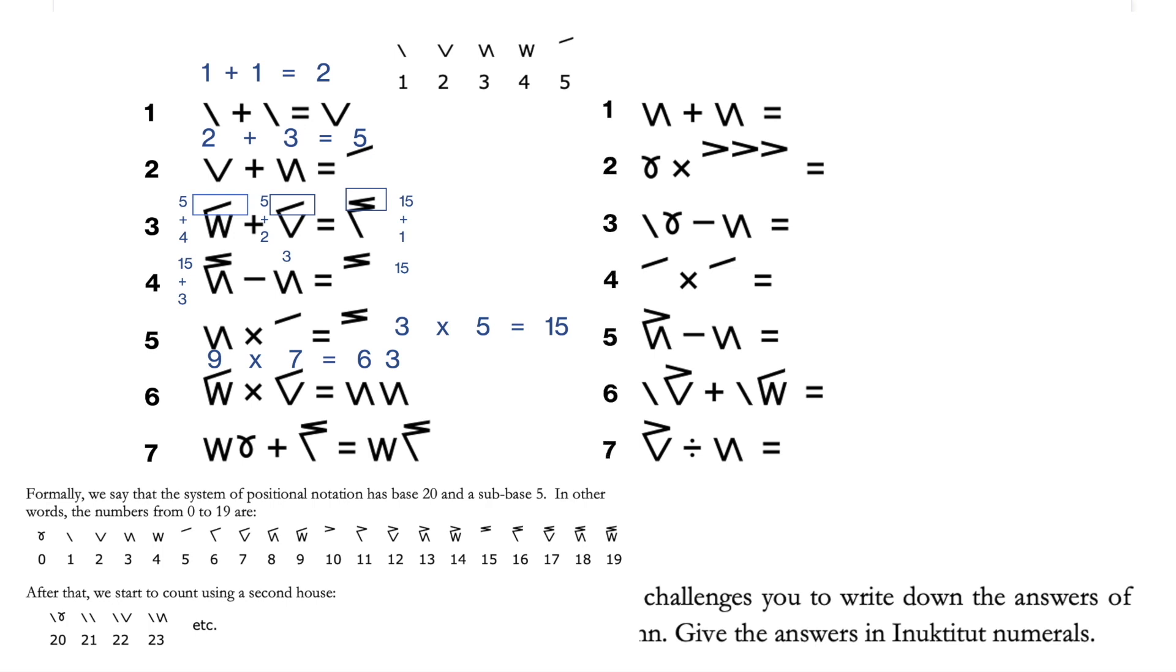Equation 1 is very simple. It is simply 3 plus 3 equals 6. Looking down at the table, 6 looks like this. Equation 1. Tick.